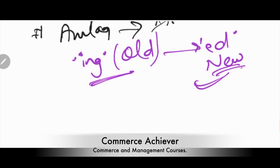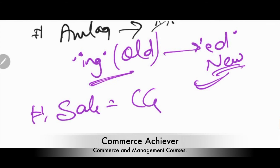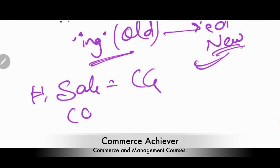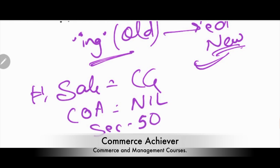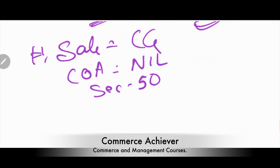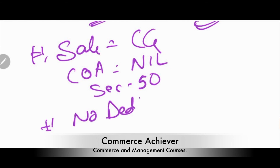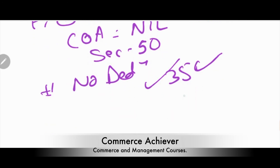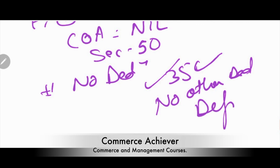If there is a sale or transfer of these assets and a capital gain arises, Section 50 is applicable — as you read in the nil cost basis for research assets. Also, once you have claimed a deduction under Section 35, no separate depreciation is allowed on those capital expenditure assets.